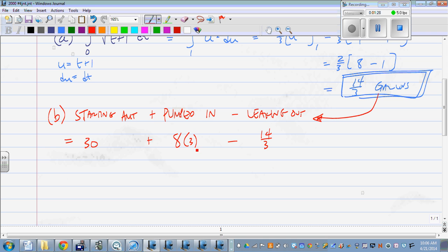So we have 30 plus 24, we get 54, minus 14 thirds. No calculator for this problem, so we're going to do this by hand.